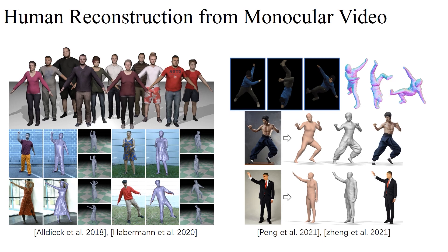Some prior methods rely on an explicit parametric model or specific template mesh for optimization. However, the results are constrained on a fixed topology, and are either hard to model the loose clothing or extend to different humans.